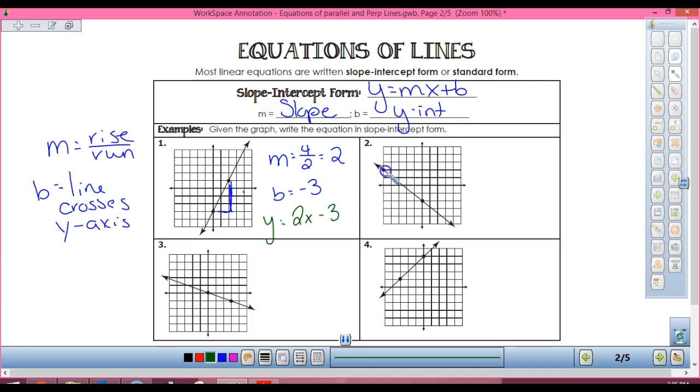Okay, slope. Draw your triangle. M equals what's my rise? Four. Four. Over five, six, seven, what the run is. One, two, three, four, five.